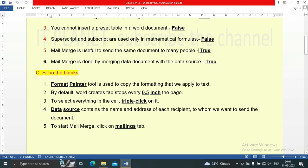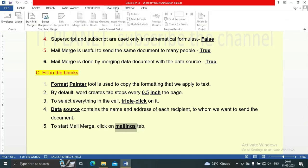To select everything in the cell, triple click on it. Data source contains the name and address of each recipient to whom we want to send the document. To start Mail Merge, click on the Mailings tab.